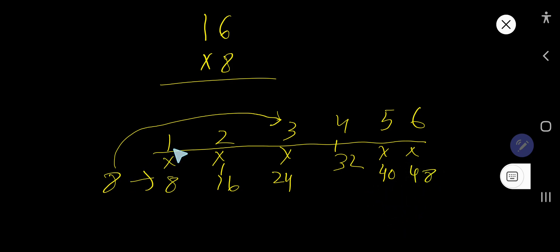That is 8 times 1 is 8, 8 times 2 is 16, 8 times 3 is 24, 8 times 4 is 32, 8 times 5 is 40, 8 times 6 is 48. If you forget the multiplication table of 8, you can find it out, right?